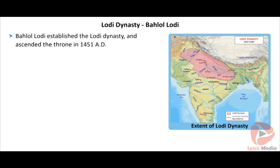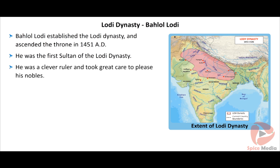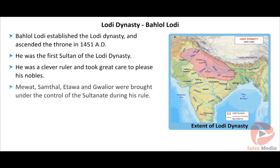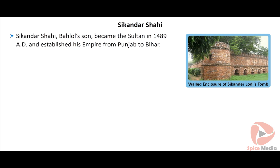In 1445 AD, Muhammad Shah died and the throne was taken over by Alauddin Shah. Alauddin Shah was a weak ruler and gave up the throne of the Delhi Sultanate to Balol Lodi when Lodi occupied Delhi in 1451 AD. After handing over the throne, Alauddin Shah left for Baduwan and died in 1478 AD. The Syed dynasty came to an end and the Lodi dynasty was founded.